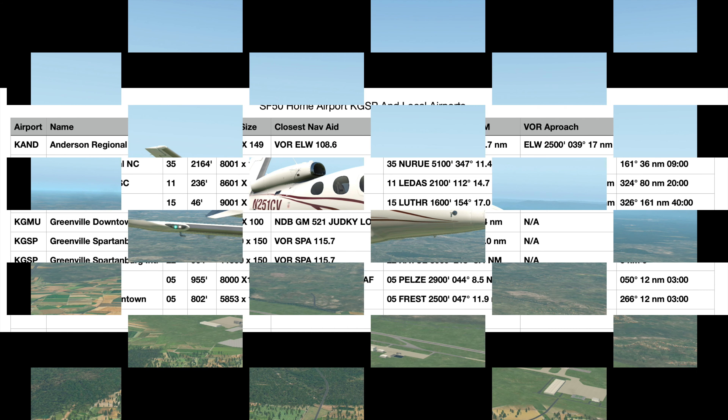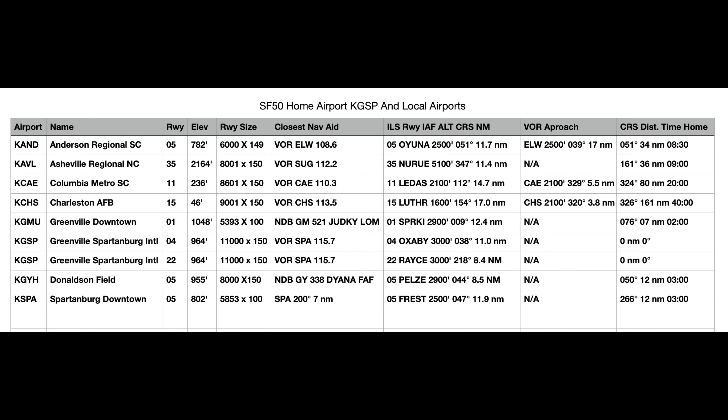I keep a list of information about not only my home airport but many local airports nearby, and this is how I organize that list. It's much easier to pull this up than go searching for information about an airport you want to fly to, or how to get back home from one of the other local airports. My definition of a local airport is a one-hour flight — in the Cirrus jet that's plus 200 miles. The other criteria I use for the Cirrus jet is that the runway length needs to be 5,000 feet or more.